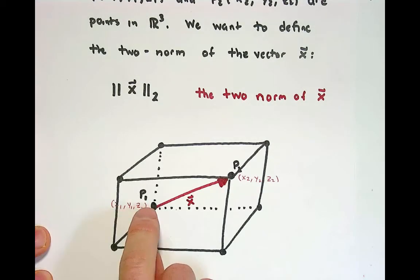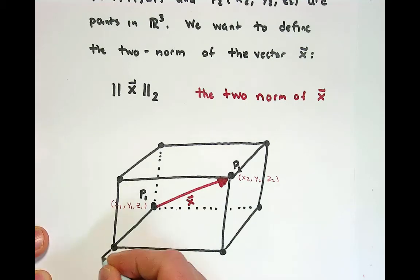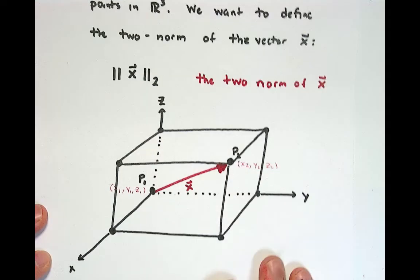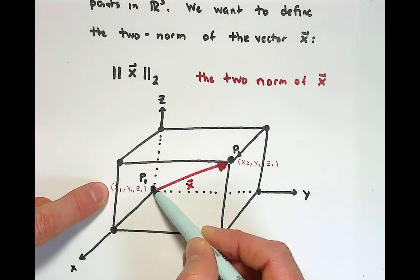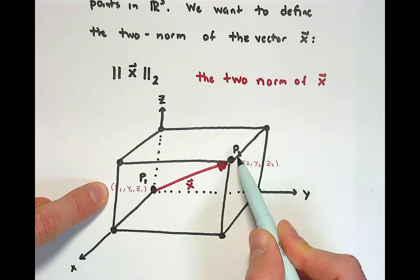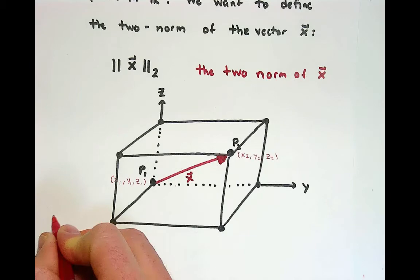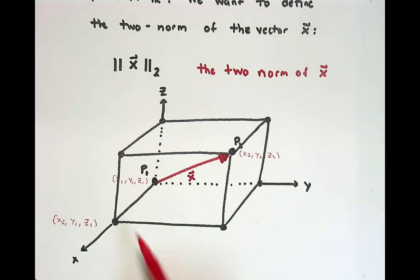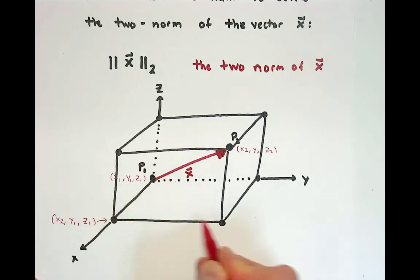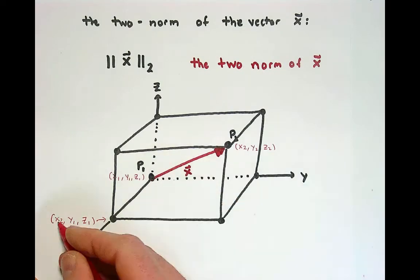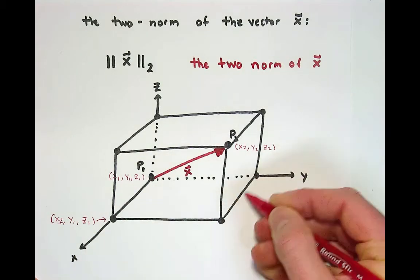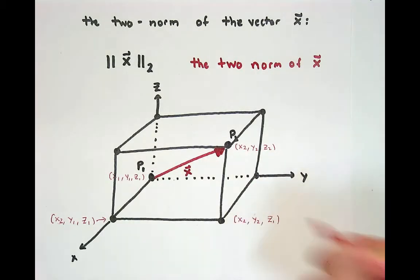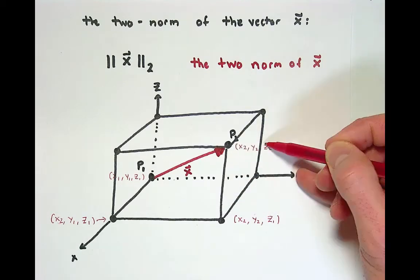We can actually define all the points on this box. If this is x1, y1, z1, and we call this the x direction, this the y direction, then by the right-hand rule, this must be the positive z direction. To go from x1 to the next point, the x value becomes x2, while y and z remain y1 and z1. The next point over is x2, y2, z1. And then to get up to P2, the height becomes z2.